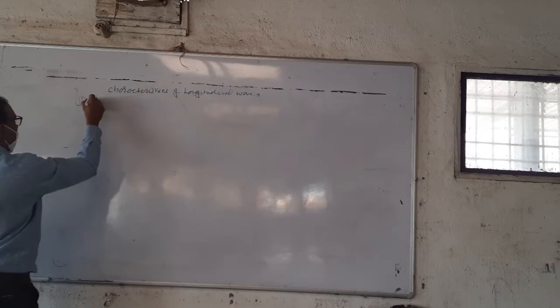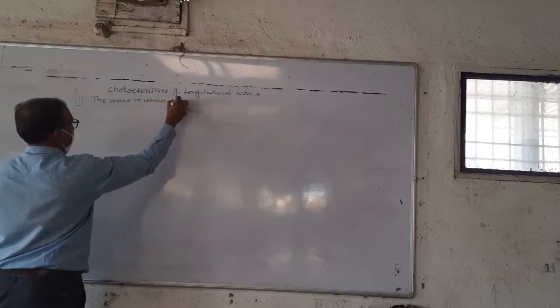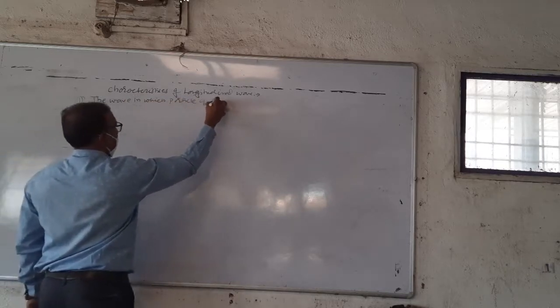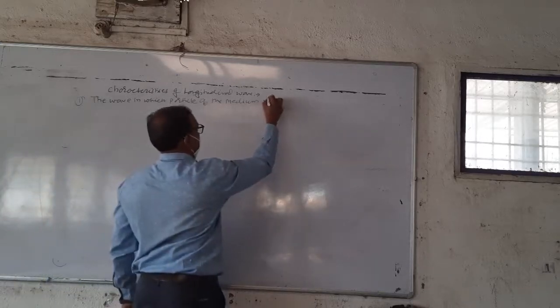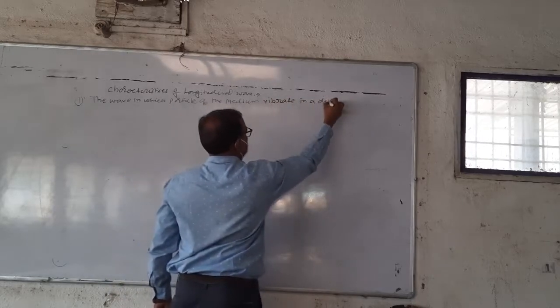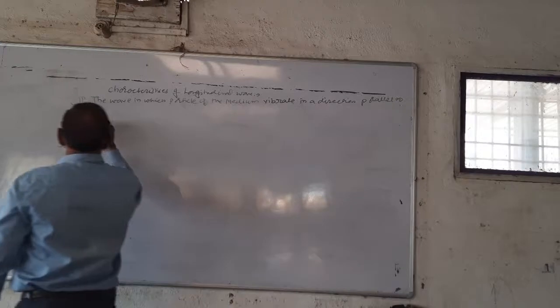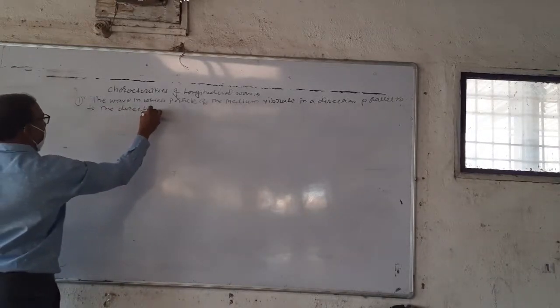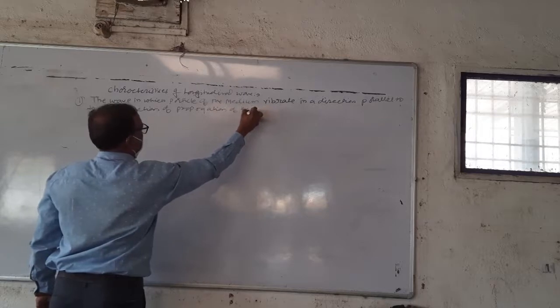Next, the characteristics of longitudinal waves. First characteristic is the definition: a longitudinal wave is one in which the particles of the medium vibrate in a direction parallel to the direction of propagation of the wave.